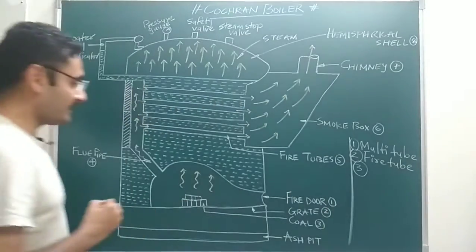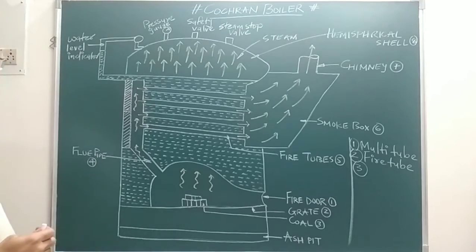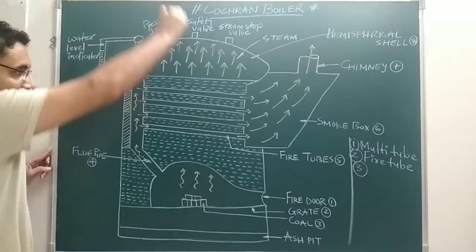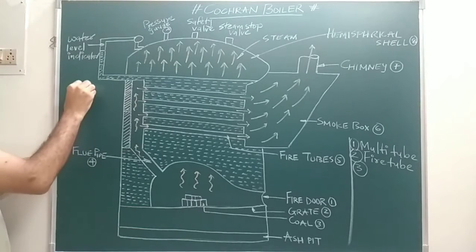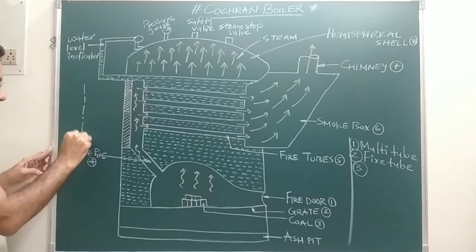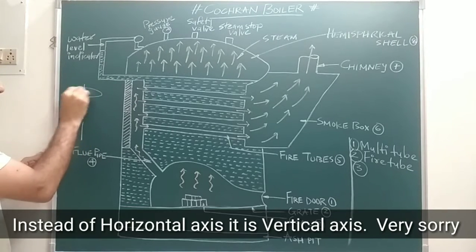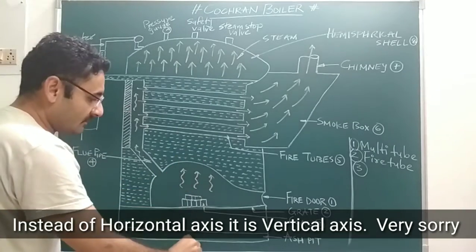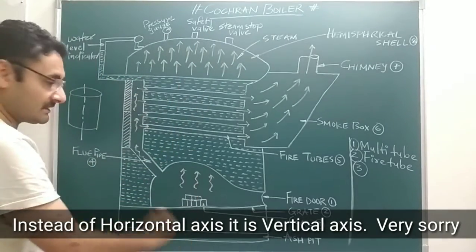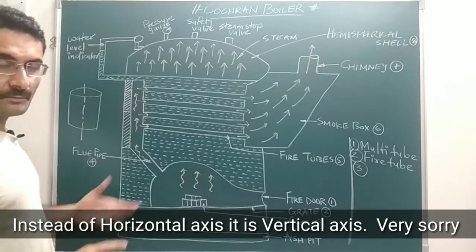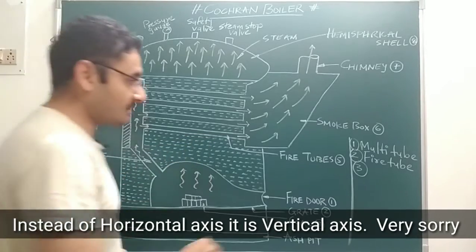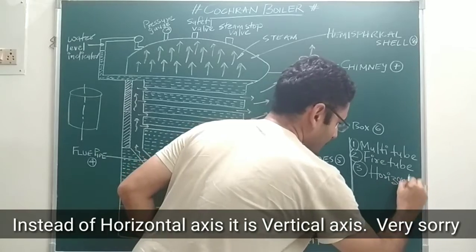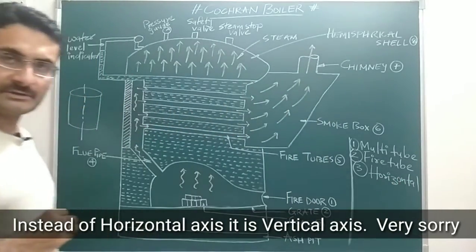The third point: from the geometry of the boiler, if you want to draw the axis of this boiler, that axis will be horizontal. You can draw the shell of the boiler along this horizontal axis. That is why this boiler is also known as a horizontal axis boiler.